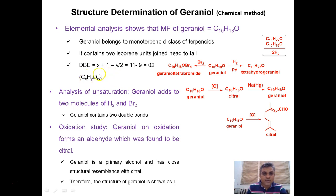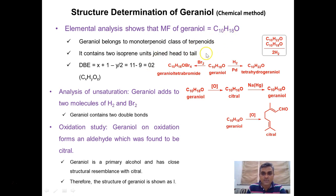For a molecule CₓHᵧOⱼ, the double bond equivalence is calculated by the formula X + 1 − Y/2. Putting in values of X=10 and Y=18, the degree of unsaturation equals 2. This means geraniol may contain two double bonds, two rings, or a combination of one double bond and one ring. In subsequent investigations we have to find out the nature of these unsaturations.